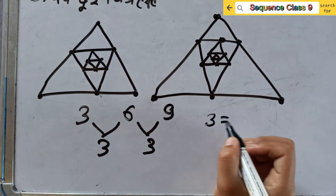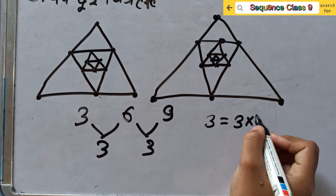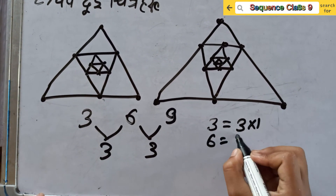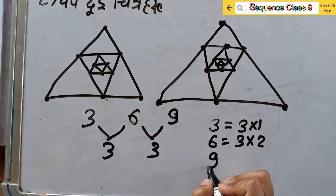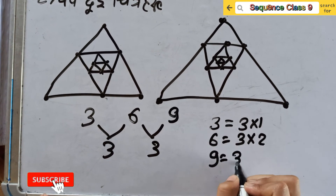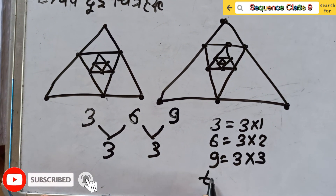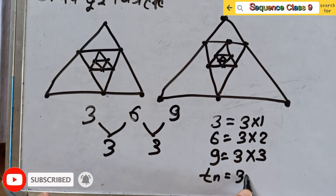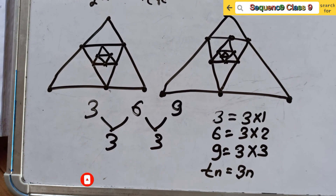3 is equal to 3 into 1, 6 is equal to 3 into 2, 9 is equal to 3 into 3. So T_n equals 3n.